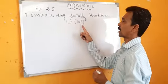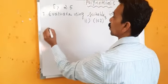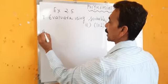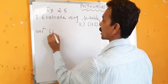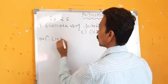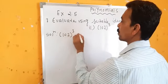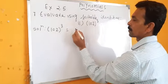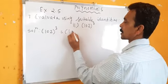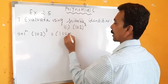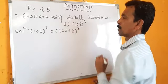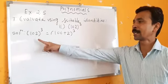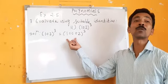The second sum is 102 whole cube. We write it as 100 plus 2 whole cube, because 102 is near to 100.